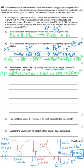From the equation, one mole of MnO₄⁻ reacts with five moles of Fe²⁺. So the moles of Fe²⁺ in the 25 cm³ sample is five times the moles of MnO₄⁻, giving us 2.156 × 10⁻³ mol.